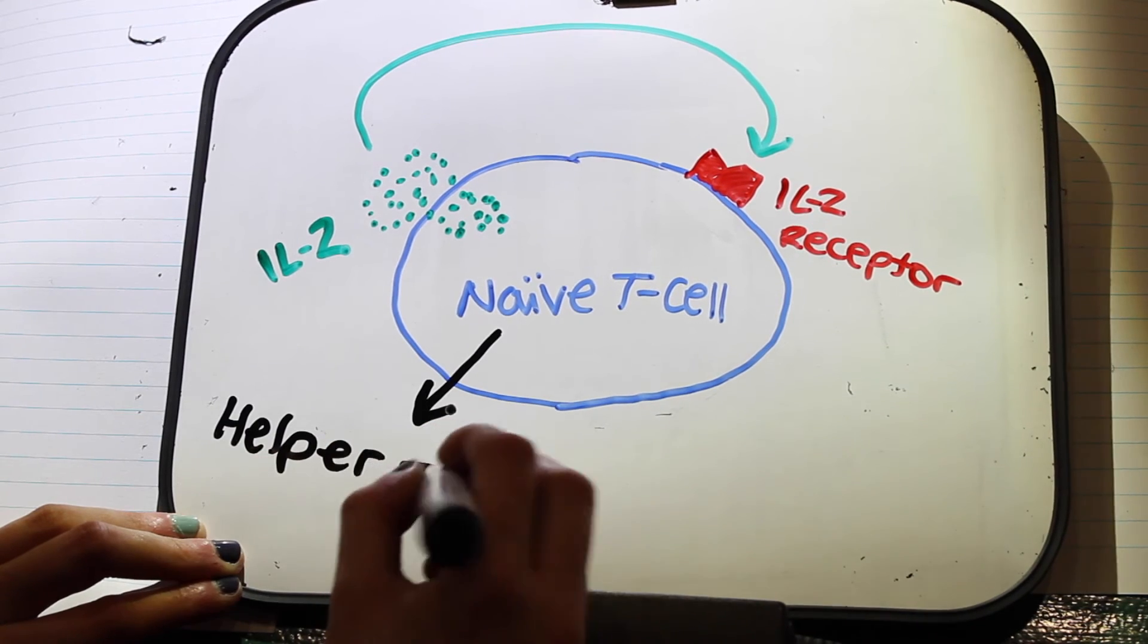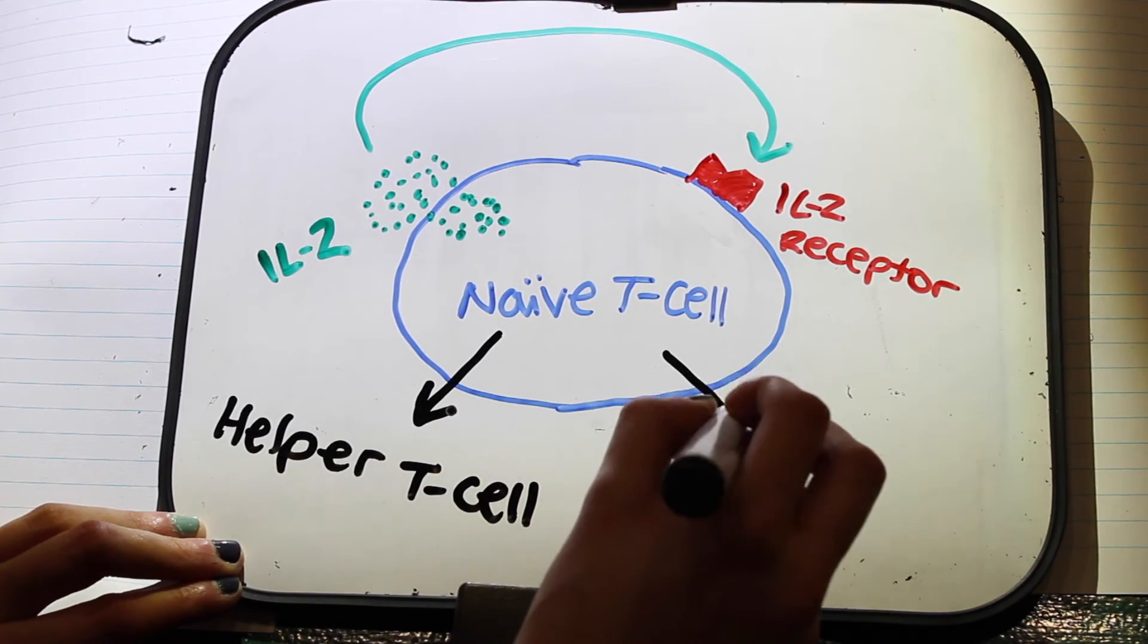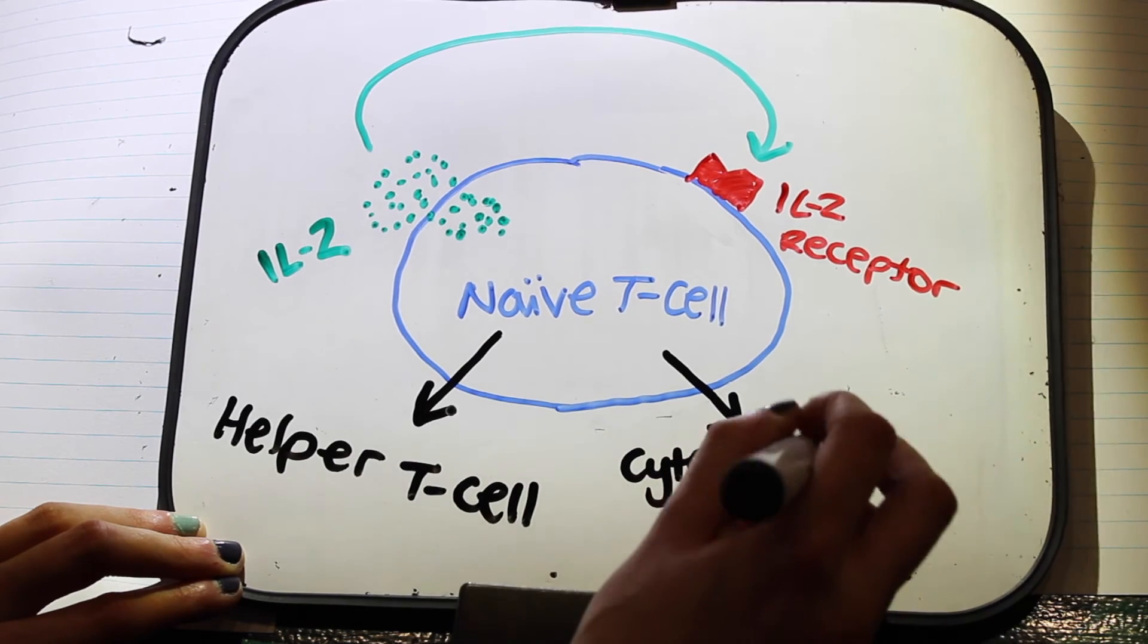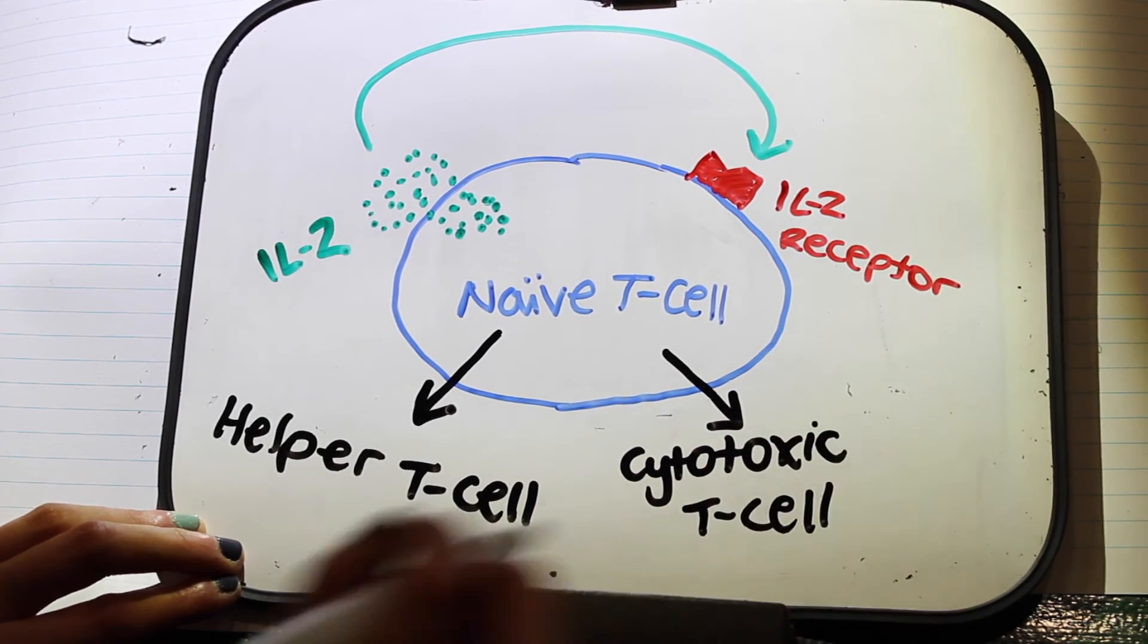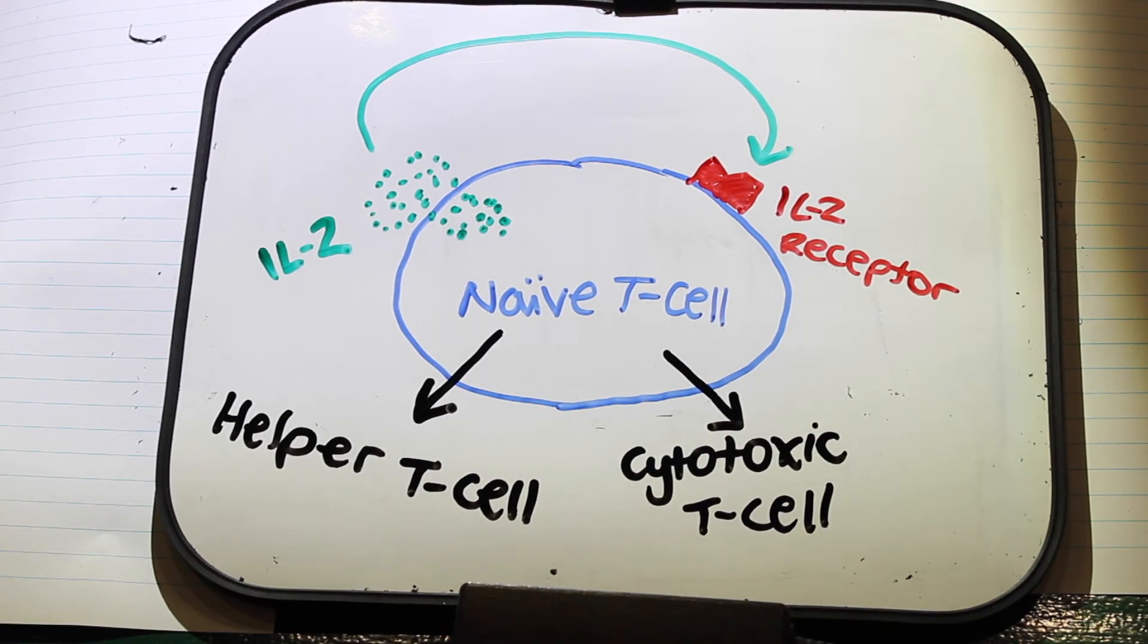This leads to the secretion of IL-2, which will proceed to interact with the receptors on the naive T-cell. This induces differentiation of the naive T-cell into either cytotoxic or helper T-cell, as well as the proliferation of these cells.